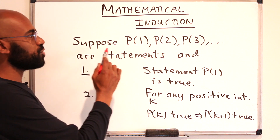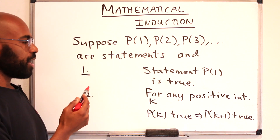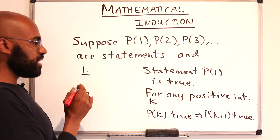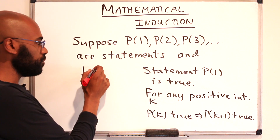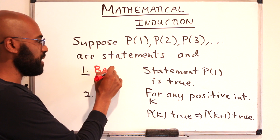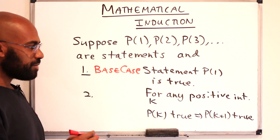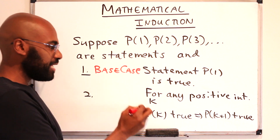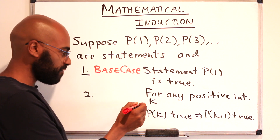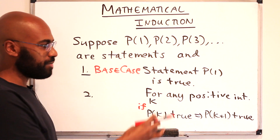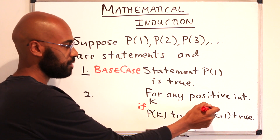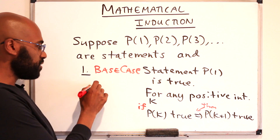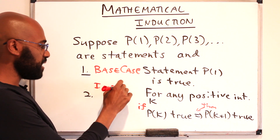Let's state that as an actual statement and then use it in an example. Our framework is as follows: suppose we have statements indexed by the positive integers and we need two things. One is that statement p1, the first statement, is true — this is usually referred to as the base case. The next is that for any positive integer k, if p of k is true, then p of k plus 1 is a true statement. This is usually called the inductive step.